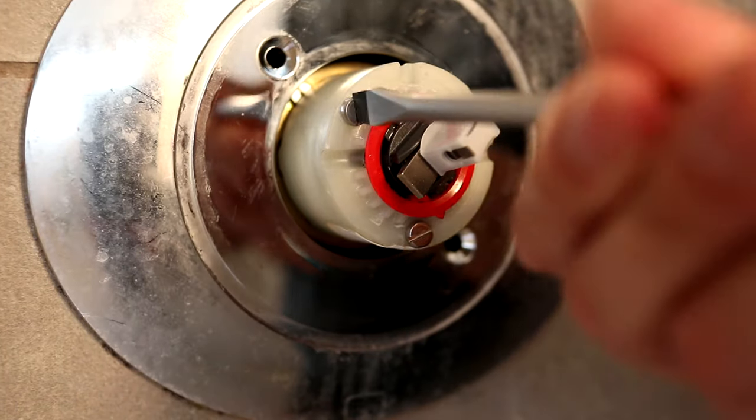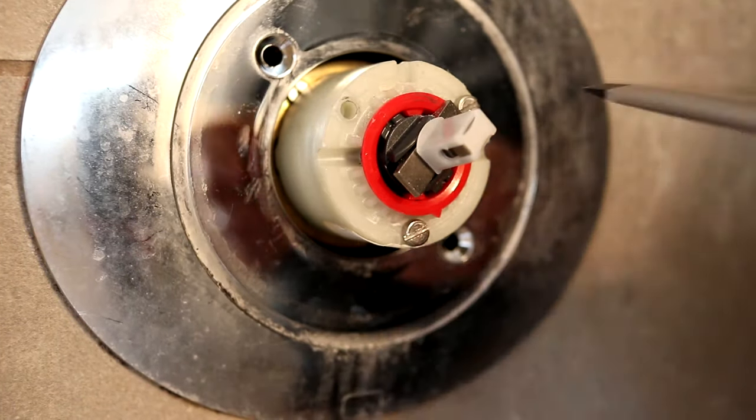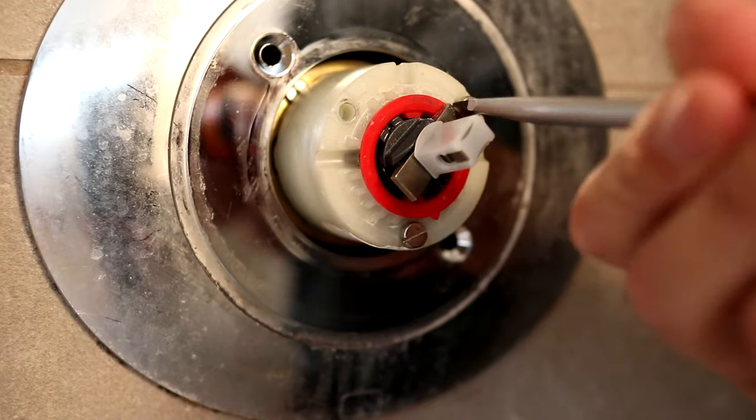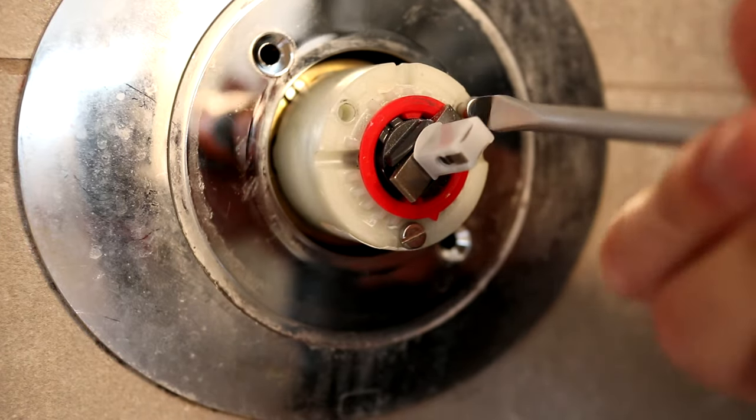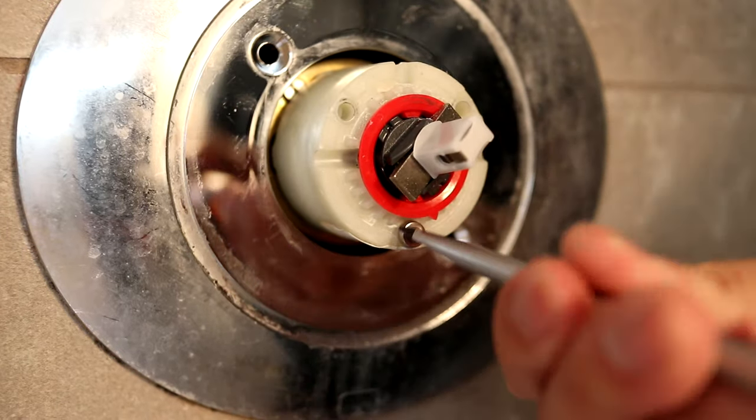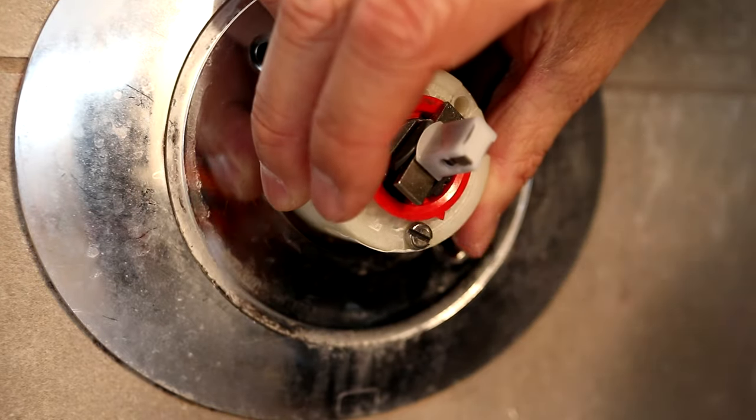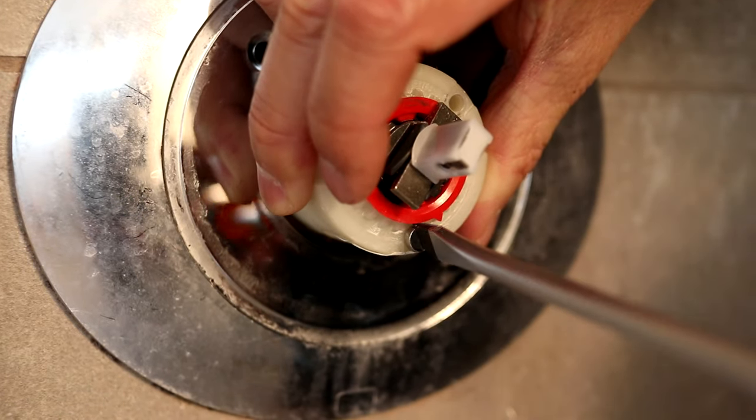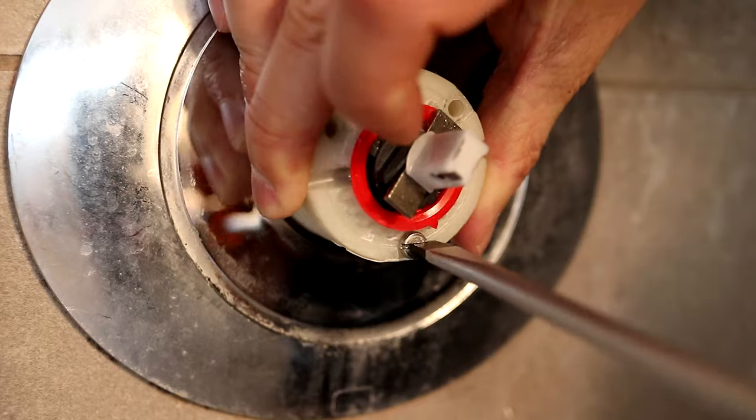This white tubular part where the handle was attached is the actual shower valve. It's actually not what's causing the hot and cold water problem I'm having. But in any case, this valve needs to be taken out by removing the three flat head screws. Be careful with the last screw so the valve doesn't fall off.